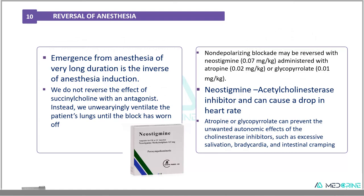The last stage of anesthesia is reversal. The emergence from anesthesia of adequate duration is the inverse of anesthesia induction. Of note: with succinylcholine or suxamethonium, we do not reverse it with an antagonist. Instead, we manually ventilate the patient's lungs until the block wears off by itself. In cases of non-depolarizing muscle blockade, we reverse it using neostigmine administered together with atropine or glycopyrrolate. Because neostigmine, as an acetylcholinesterase inhibitor, can cause bradycardias, we give atropine or glycopyrrolate to prevent the unwanted autonomic effects of neostigmine, such as excessive salivation, bradycardias, and intestinal cramping.